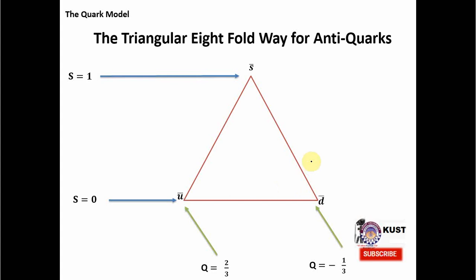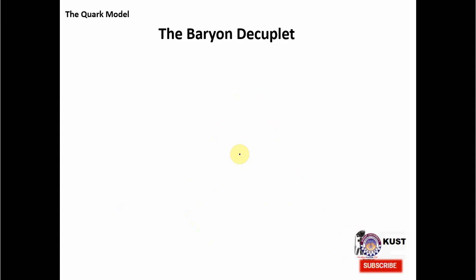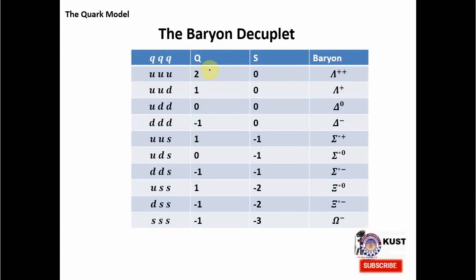Since we have constructed the 8-fold way type patterns for baryons, we now show that from combinations of these three quarks we can construct all types of baryons. For example, in the baryon decuplet there are ten particles. Out of combinations of these three quarks we have constructed all ten particles. The first particle, delta++ with strangeness zero and charge +2, is constructed out of three up quarks. Then two up quarks and one down quark gives us delta+, and so on. At the bottom you can see the famous omega minus particle with three strange quarks, which was first predicted by Gell-Mann through the 8-fold way and then later experimentally detected.